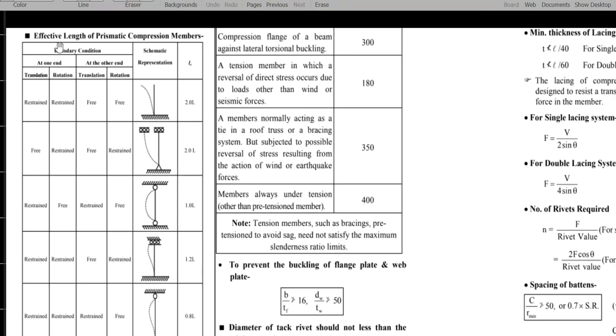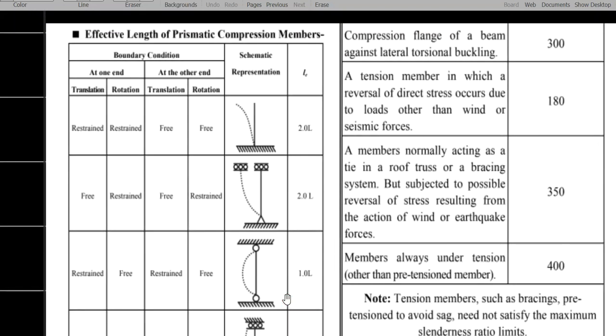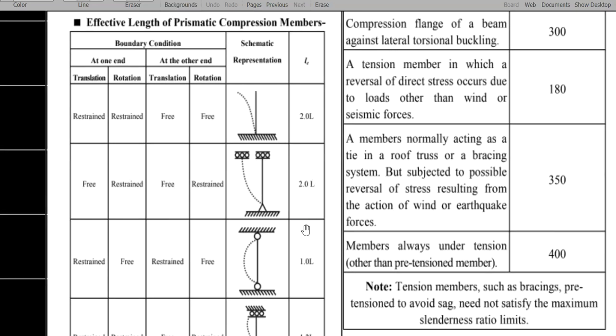Next, another important point for exam point of view that is effective length of prismatic compression members. At one end, translation motion is restrained, rotation motion is also restrained, but other end is completely free. That means one is completely fixed and another is completely free. Then this effective length is denoted as 2 times of L. At one end, translation is free and rotation is restrained. And at the other end, translation movement is free and rotation is restrained. So, we have L.